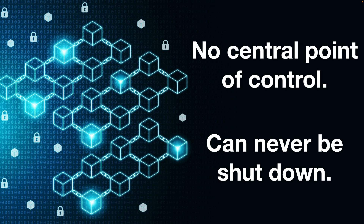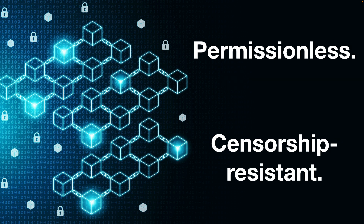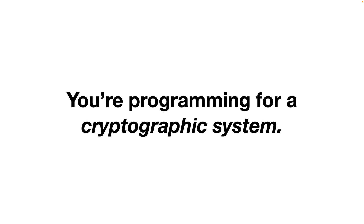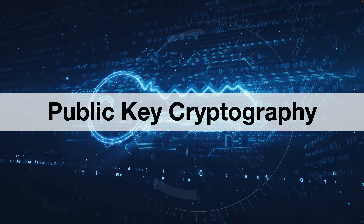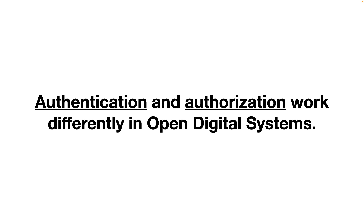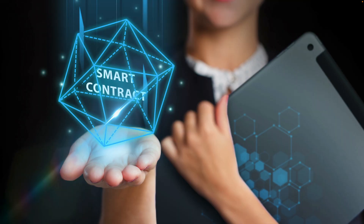Blockchain has no central point of control, it can never be shut down, it's permissionless and censorship-resistant. When you learn to leverage this technology, you also start to realize you're programming for a cryptographic system built on public key cryptography, which means authentication and authorization work differently in open digital systems like Ethereum.